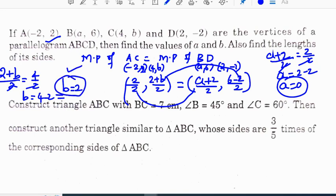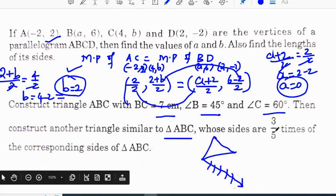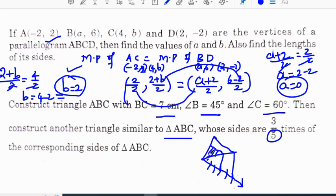Construct triangle ABC with BC = 7 cm, angle B = 45°, angle C = 60°. Then construct another triangle similar to triangle ABC whose size is 3/5 of the given triangle. As denominator 5 is greater, the triangle lies inside. Join the fifth part and draw a parallel line from the third point. This is our required line. Most problems in the question paper are from what we discussed in yesterday's videos. Thank you for watching.